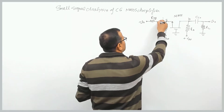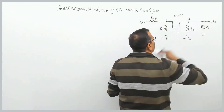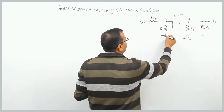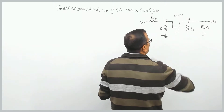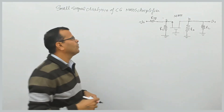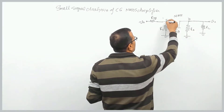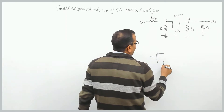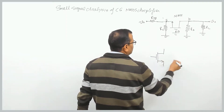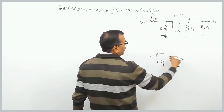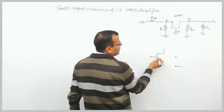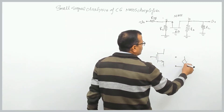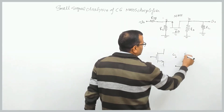Replace capacitors by short circuits and replace biasing sources on both the input and output sides by ground. We have three terminals: gate, source, and drain. In the small signal model of the NMOS, the gate terminal is held open because no current can flow from the gate side — there is an insulating layer between the gate electrode and the bulk. We then have a current source between drain and source.